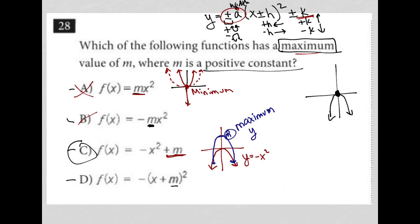And the equation would be y equals that negative x squared, but shifted up, right? So plus m units. So choice C is the correct answer for that reason.